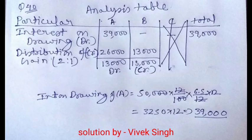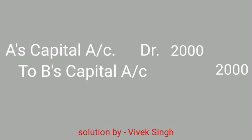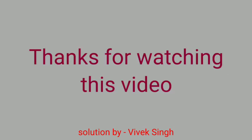After this we have to make a journal entry. The journal entry is A's capital account debit to B's capital account, because A is a debit balance so A will be debited and B will be credited. So if you like this video please like and share and subscribe this channel.